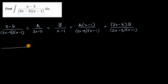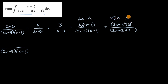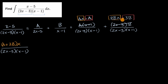Now, since I have the same denominator, I can add them. The denominator is (two x minus three)(x minus one). In the numerator: distributing A gives Ax minus A, and distributing B gives two Bx minus three B. Adding the x terms: Ax plus two Bx equals (A plus two B)x. Adding the constant terms: minus A minus three B, which I'll write as minus (A plus three B).